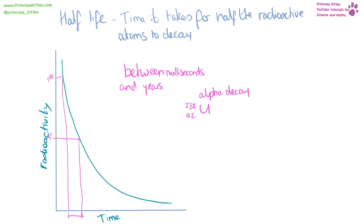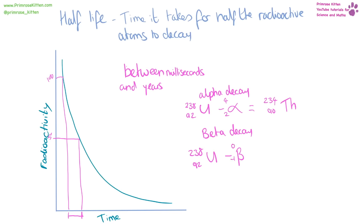The calculations for decay are simpler than they look. For Uranium-238 undergoing alpha decay (alpha is 4, 2): 238 − 4 = 234, and 92 − 2 = 90. Then we use the periodic table to look up what has an atomic number of 90, which gives us thorium. For beta decay, the atomic number goes from 92 to 93, which gives us neptunium. The atomic number is the important thing in these calculations.